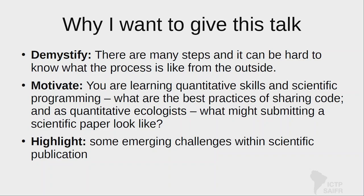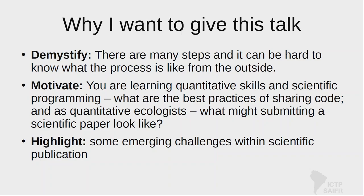A final motivation is thinking about: what is this process? Is it perfect? The answer is, it is not. Maybe thinking about some of the ways these challenges might be broken down and solved. There are two main parts: first I'll walk through publishing code, which is really important especially for a quantitative ecology class. Then later I'll think about the scientific publication process more generally.